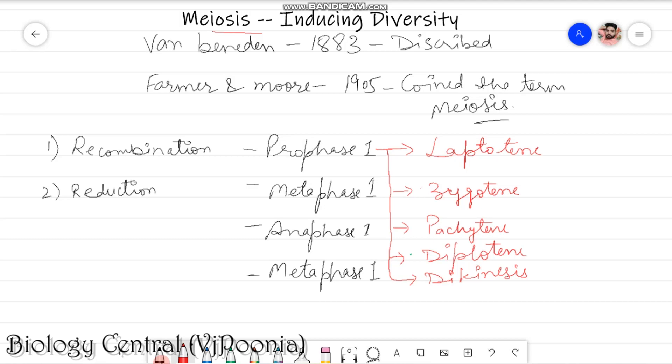Hello and welcome to Biology Central. This is Vijay Poonia with you all talking about meiosis. It was discovered by Van Beneden and Farmer Moore.